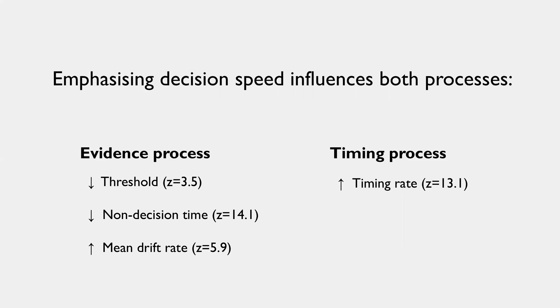So consistent with traditional explanations of the speed accuracy trade off, we find that thresholds decrease and decision time can become faster. And the mean rate across all of the evidence accumulators goes up. But we also find that in the timing process, the timing rate goes up. So as you're asked to be faster, you kind of set your internal clock to run faster, which is very sensible.